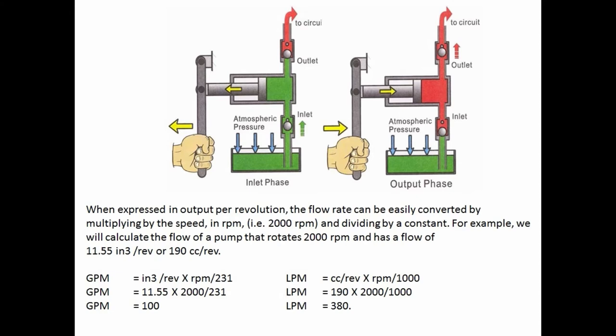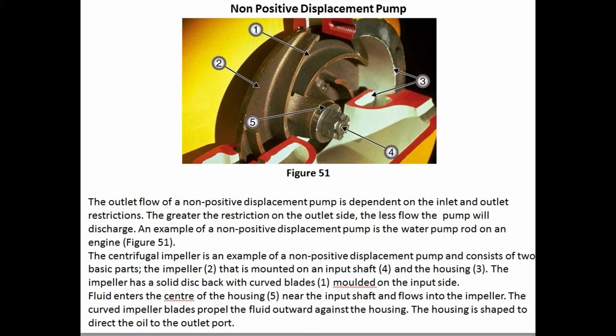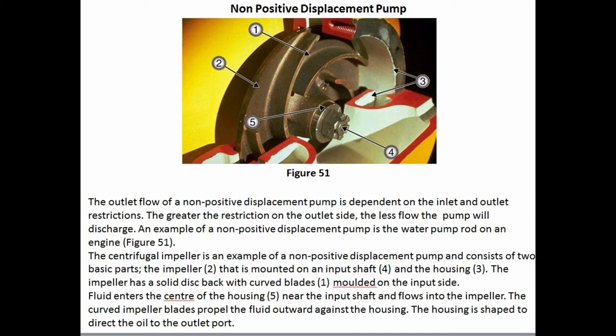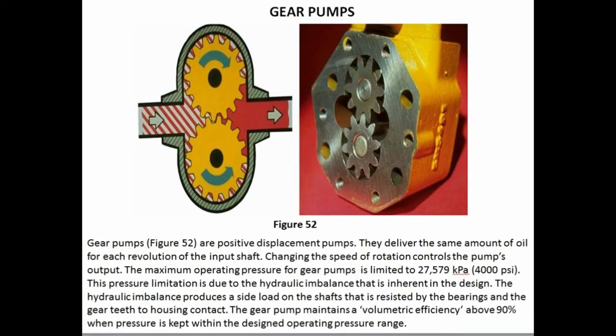The outlet flow of a non-positive displacement pump is dependent on inlet and outlet restrictions — the greater the restriction on the outlet side, the less flow the pump will discharge. An example of a non-positive displacement pump is the water pump on an engine. Figure 51 shows the centrifugal impeller, which consists of two basic parts: the impeller mounted on an input shaft, and the housing. The impeller has a solid disk back with curved blades. Fluid enters the center of the housing near the input shaft, flows into the impeller, and the curved blades propel the fluid outward against the housing, which directs the oil to the outlet.